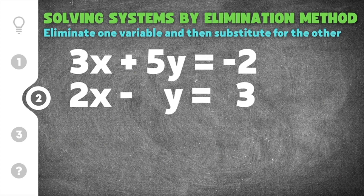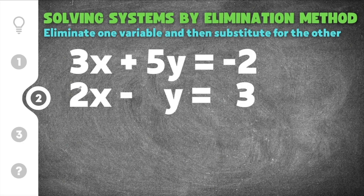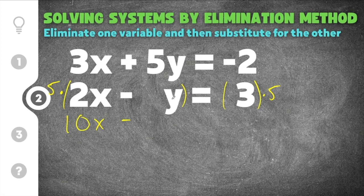In this system, the easiest thing to do is multiply the bottom equation by 5. The reason is that multiplying by 5 gives us a positive 5y in the top equation and a negative 5y in the bottom, so when you add those y's cancel. So I'm going to multiply all parts of that equation by 5: 5 times 2x is 10x, minus 5 times y is 5y, equals 3 times 5 which is 15. The equation 2x minus y equals 3 has now been transformed into 10x minus 5y equals 15.